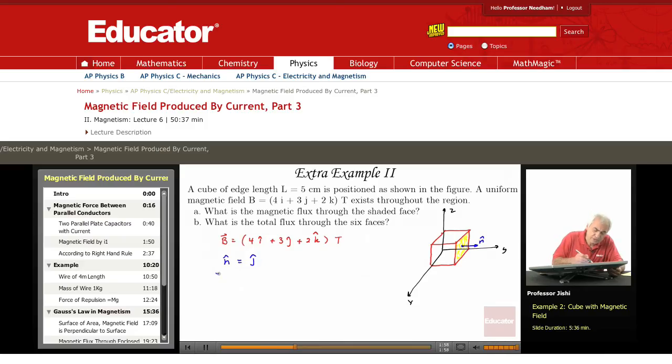So the flux phi is B. Since B is constant and n is constant, it's just B dot n times the area. But n is j hat, so this is B dot j hat times the area. B i hat dot j hat is zero and k hat dot j hat is zero, so there's only j hat dot j hat which is one.